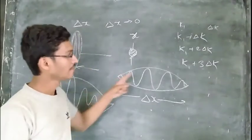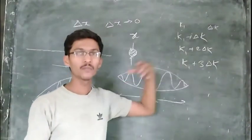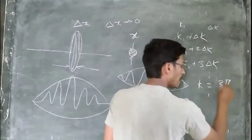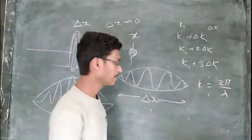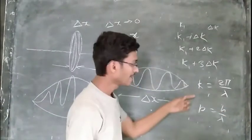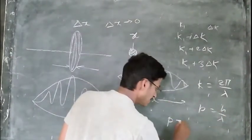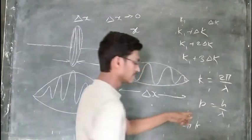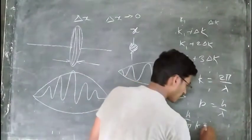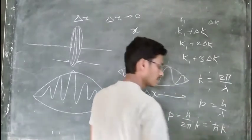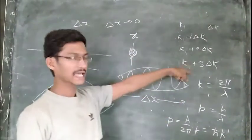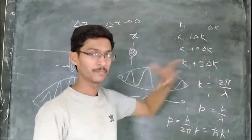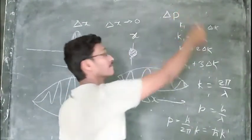But at the same time, we are increasing k, and k is nothing but related to the momentum. We know k equals 2π divided by lambda, which is the wave vector. And p is nothing but h divided by lambda. Combining these two equations, we get p equals h divided by 2π into k, or equivalently h-cross into k, where h-cross is the reduced Planck's constant. So k is directly proportional to the momentum, and therefore delta k can be replaced by delta p.